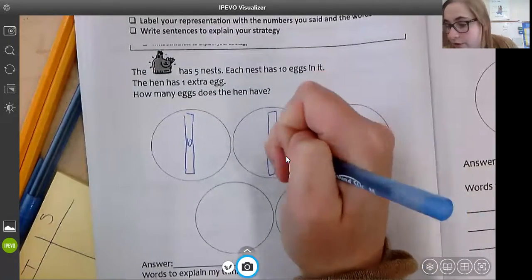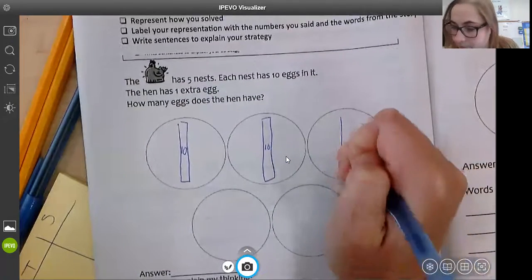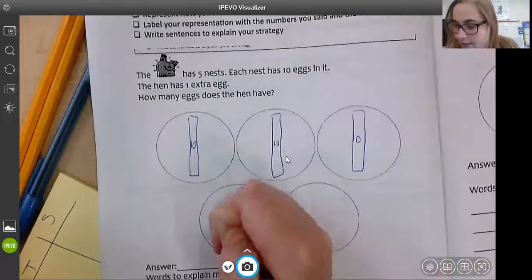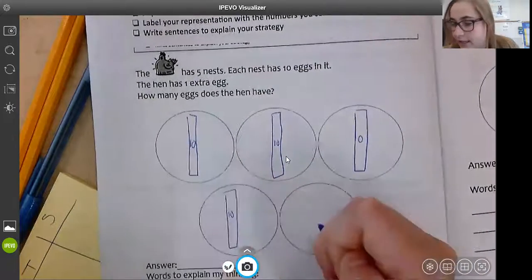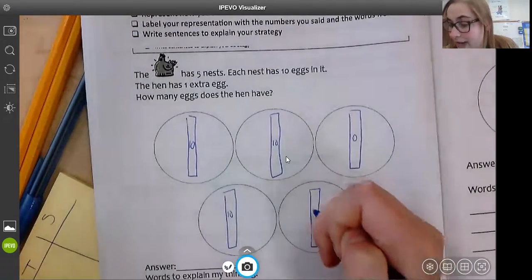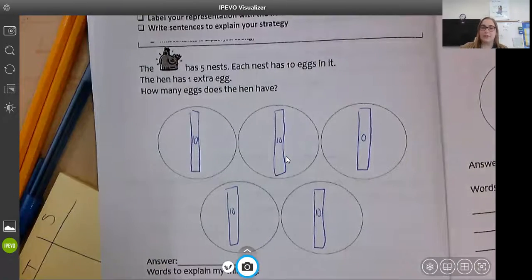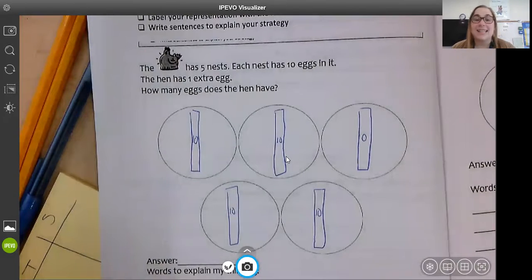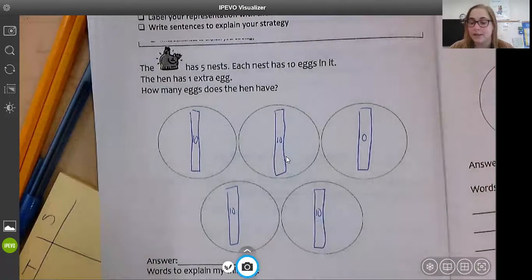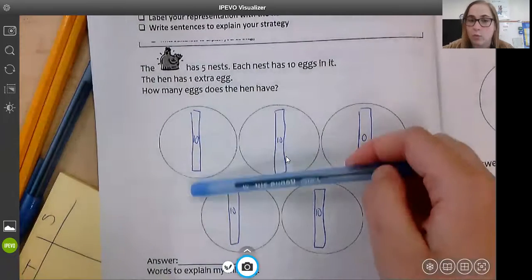One 10, two 10s, three 10s, four 10s, five 10s. I could draw 10 sticks because I knew that the nests had 10 eggs inside of them. So 10 eggs can make one 10.